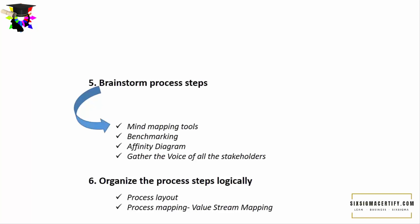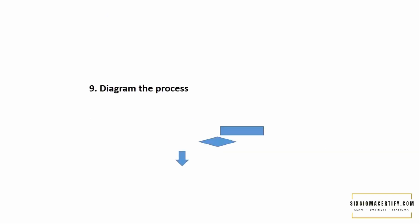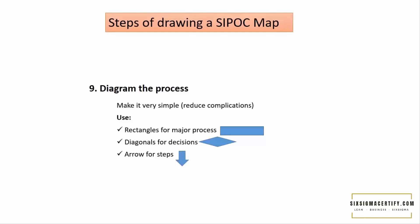We can use various process-mapping tools, for example the value stream mapping, to get the wide or helicopter view of the improvements that should be done in any process. The seventh step is to number the process. Last but not the least, after drawing the SIPOC diagram, we should validate whether our concept of the process is exactly the same as what is running on the floor. Gemba Walk is used to describe personal observation of the work where it is happening, to see the performance of the products or services. You can validate with your direct observations and then diagram the process, making it as simple as possible. We can use rectangles for major processes, diamonds for making decisions, and arrows for the steps.